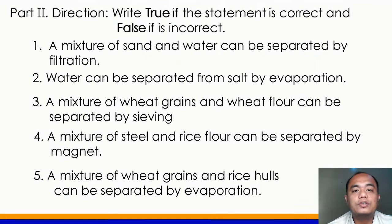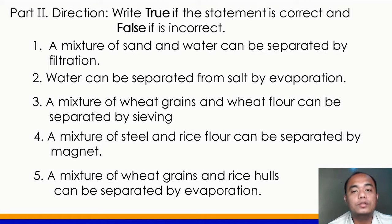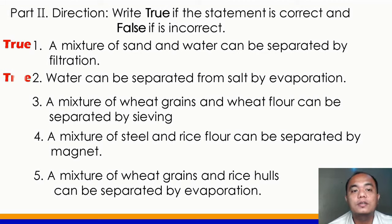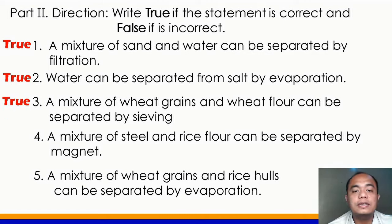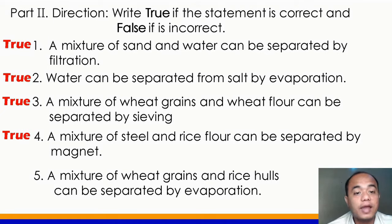Another activity. Write true if the statement is correct and false if it is incorrect. Number 1: a mixture of sand and water can be separated by filtration — true. Number 2: water can be separated from salt by evaporation — true. Number 3: a mixture of wheat grains and wheat flour can be separated by sieving — true. Number 4: a mixture of steel and rice flour can be separated by magnets — true. Number 5: a mixture of wheat grains and rice hulls can be separated by evaporation — false.